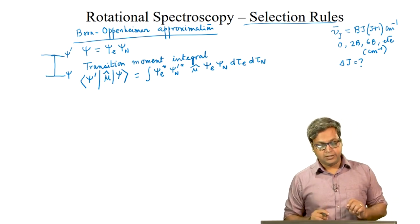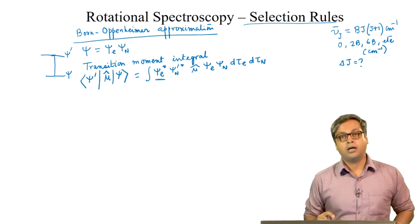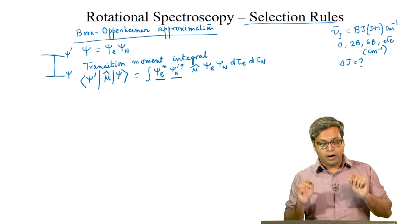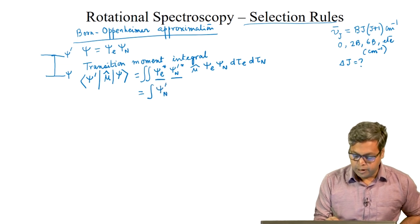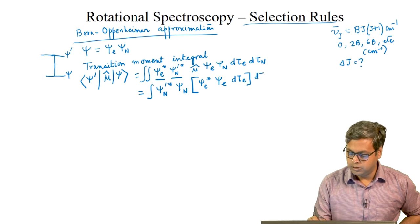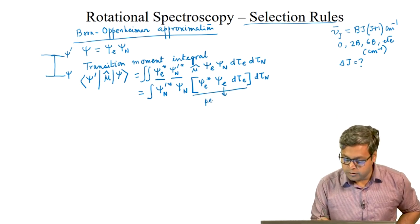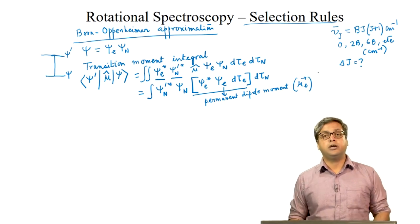If we expand this integral, we can write it as psi E star psi N prime star times the dipole moment operator times psi E psi N d tau E d tau N. Since in a rotational transition the electronic state does not change, we write psi E star; however, because the nuclear state changes, we write psi N prime star. The quantity in brackets is the permanent dipole moment, mu E, corresponding to the electronic state psi E.